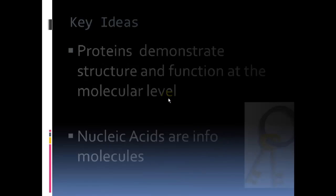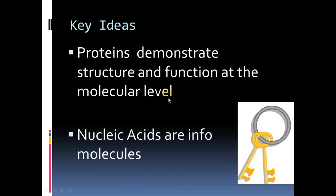Key ideas we'll consider: proteins demonstrate structure and function at the molecular level, not at the organ level. Proteins are molecules with important emergent properties that come from their structure. We'll also discuss nucleic acids as information molecules—the molecules we inherit and pass on to our offspring.